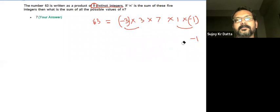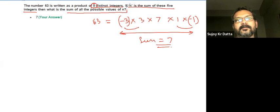So there is only one way. It's saying n is the sum of these five integers. So the sum of these five integers: 3 and -3 cancel out, 1 and -1 cancel out, the sum is 7. They are saying what is the sum of all possible values of n?